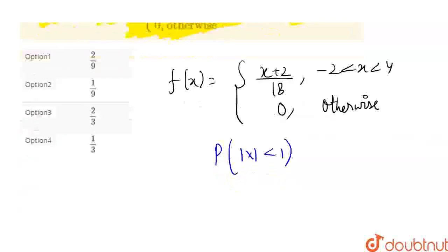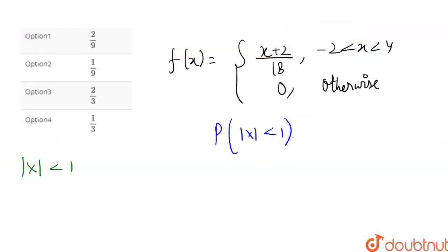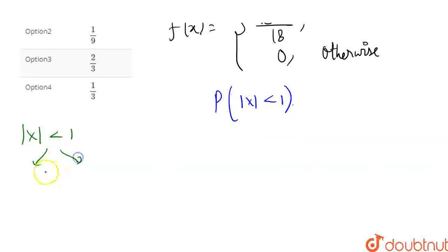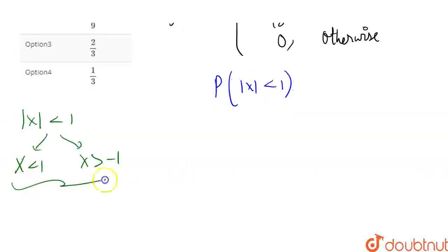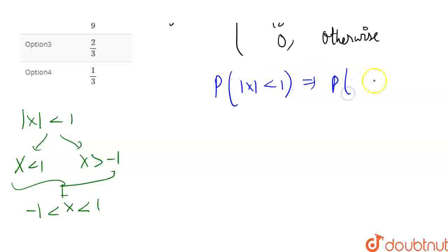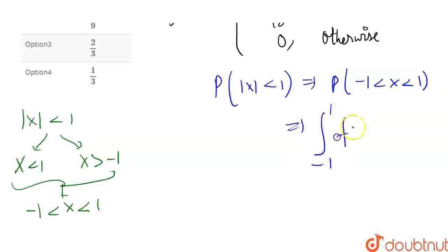So probability of |x| < 1 is equal to probability of x being between minus 1 and 1. And probability of x between minus 1 to 1 means we compute the integral from minus 1 to 1 of f(x) dx.